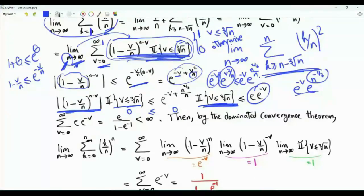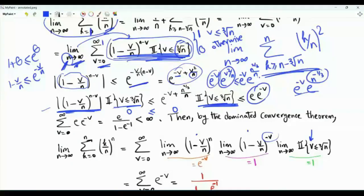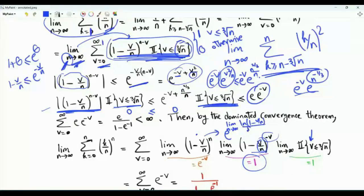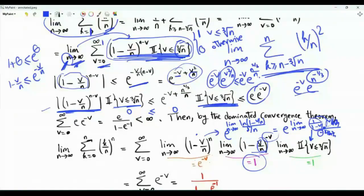Taking the limit inside, we fix v and let n → ∞. The indicator 1_{v ≤ n^(1/3)} → 1 for every fixed v since eventually n^(1/3) exceeds v. The factor (1 - v/n)^(-v) → 1 since v/n → 0. For the main factor, (1 - v/n)^n → e^(-v) by L'Hôpital: ln(1 - v/n)/(1/n) → -v, so the limit is e^(-v). Together the limit of each term is e^(-v).